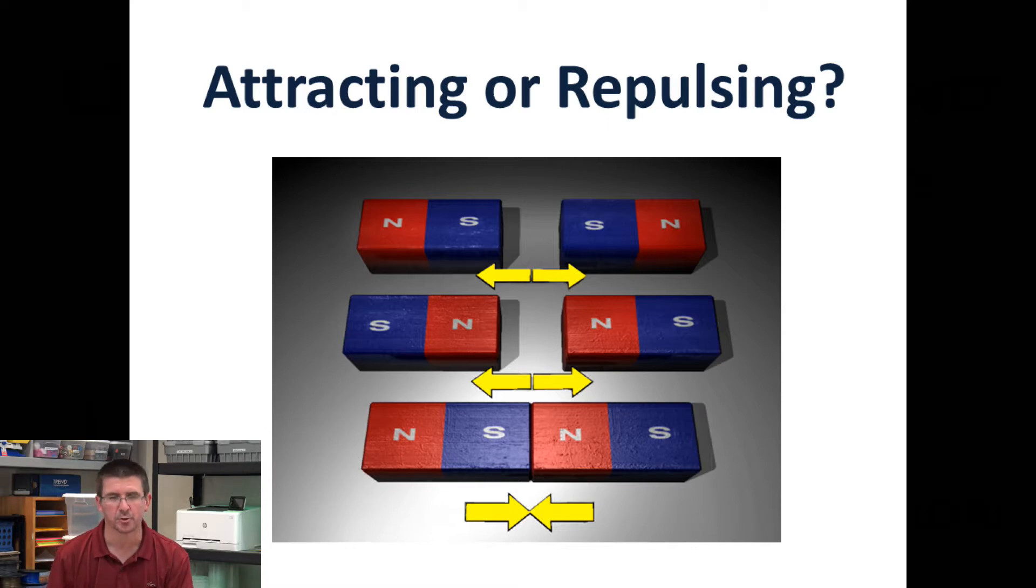Anytime you have a magnet, maybe a block magnet or a disc magnet or something that's not identified as having a north and a south pole, if you have a magnet where you know this is the north pole of the bar magnet, you can always use that to determine where the north pole and where the south pole is on an unknown magnet due to these ideas of magnetic attraction and magnetic repulsion.